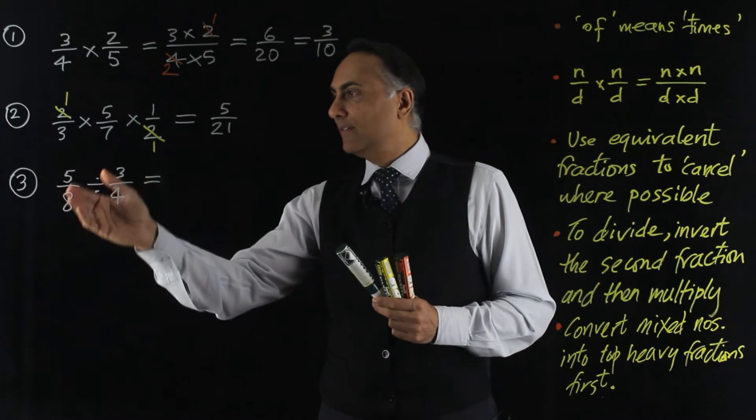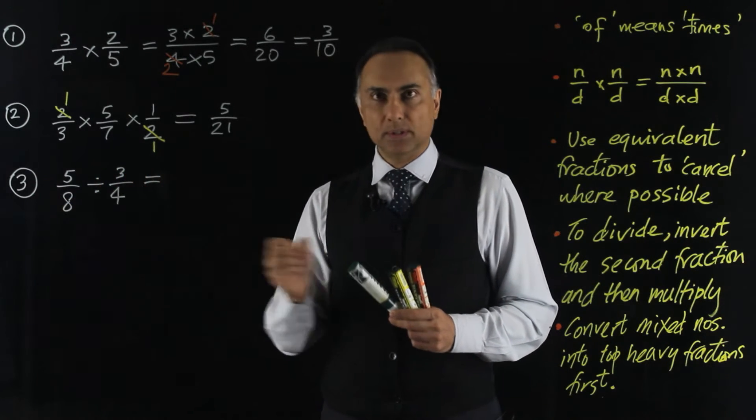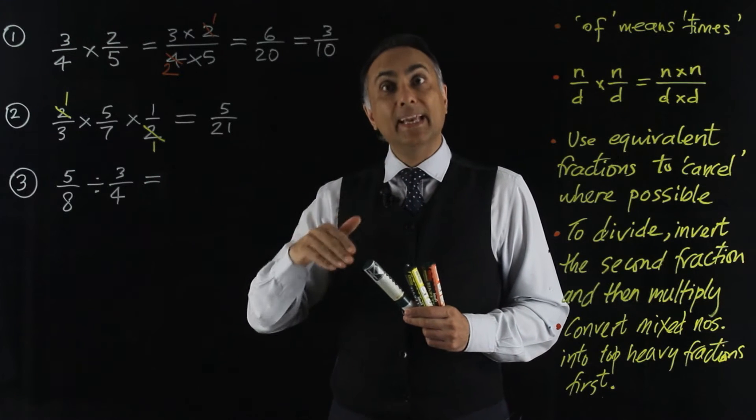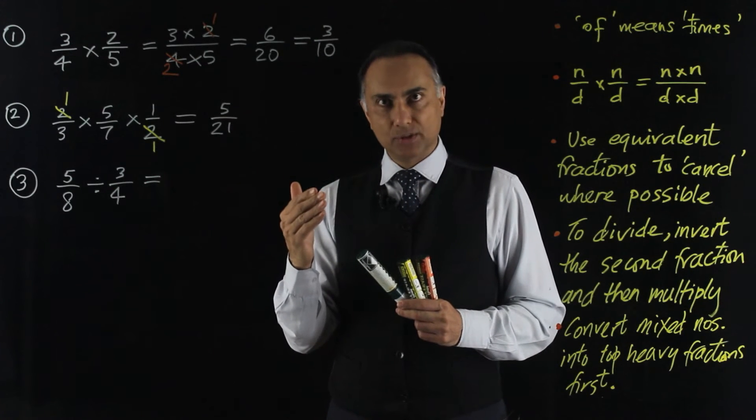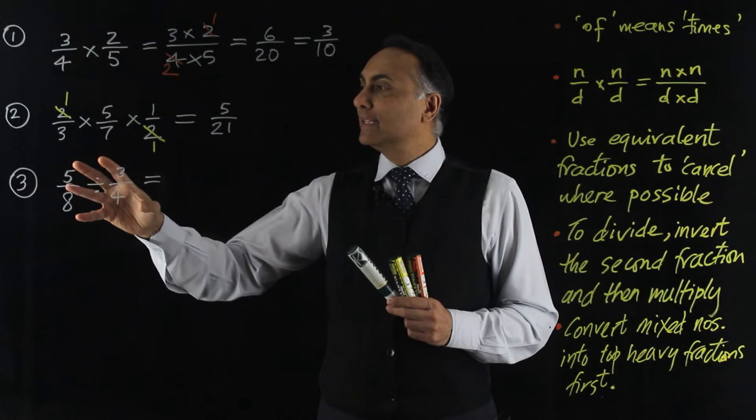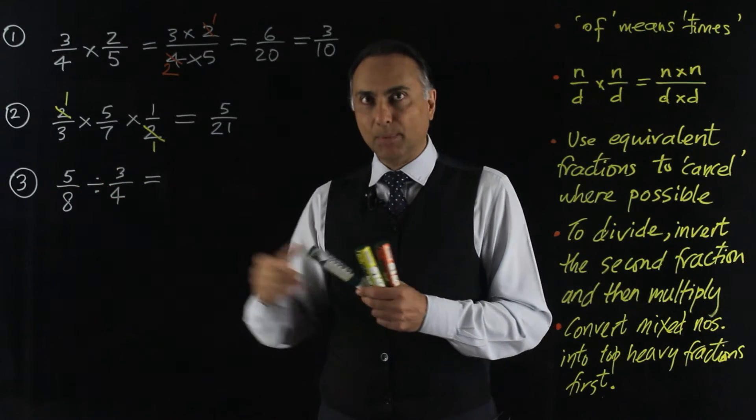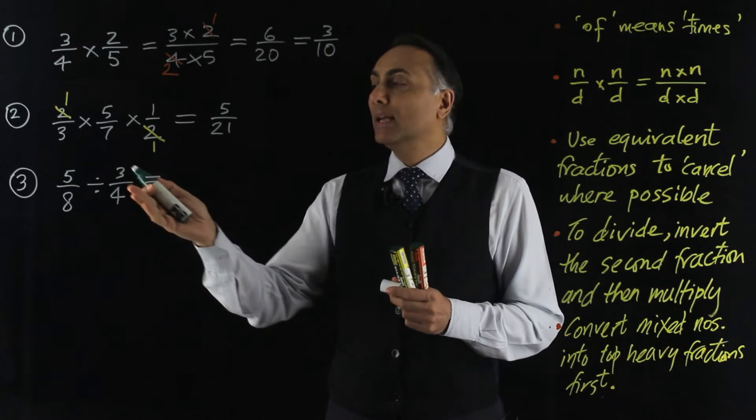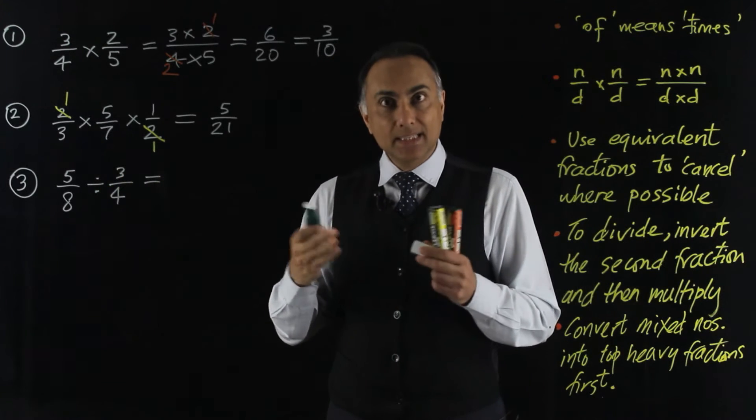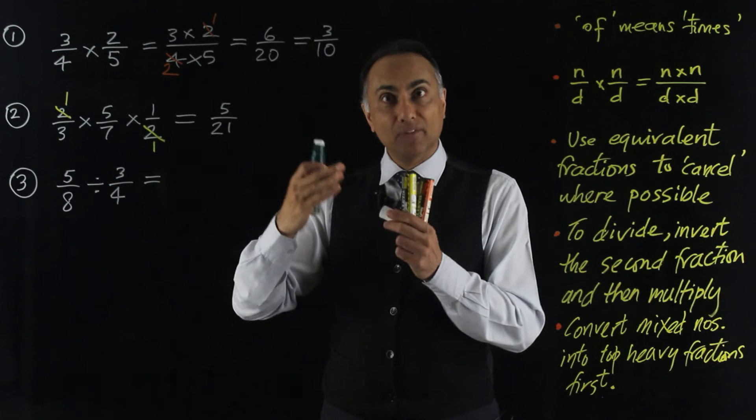Now let's take a look at dividing vulgar fractions. 5 eighths divided by 3 quarters. Division is the inverse of multiplication. So what we do is we invert the second fraction and multiply.